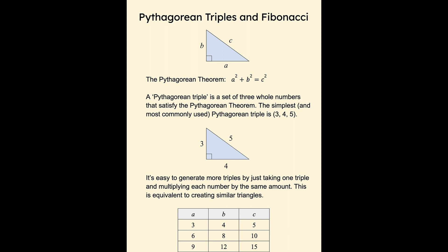A Pythagorean triple is a set of three whole numbers that satisfy the Pythagorean theorem. The simplest, and by far the most commonly used, especially in high school math problems, is the Pythagorean triple 3, 4, 5.